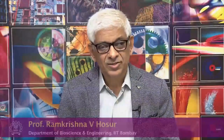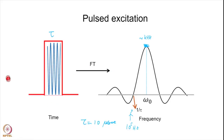We talked about pulse excitation last time. RF applied for a short time tau is called an RF pulse. When we apply the RF pulse it will result in excitation of a larger number of frequencies, as indicated here, because there is a Fourier relationship between the time domain function and the frequency domain distribution of the excitation.